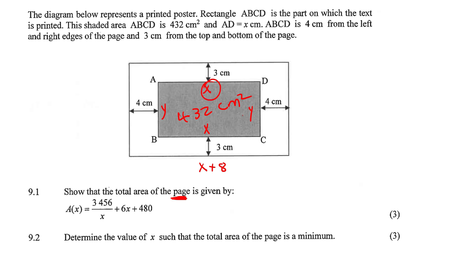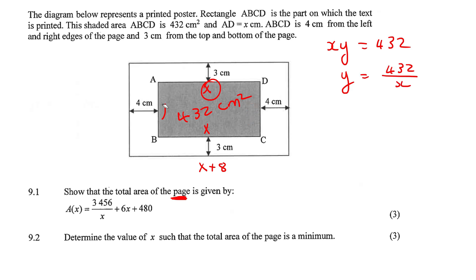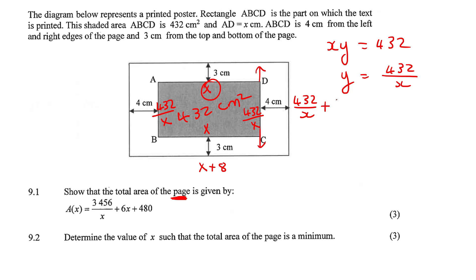So we know that X multiplied by Y is 432, because that is what area is. So we can then say that Y is 432 over X. We can put this length then as 432 over X plus 3 plus 3, so that's plus 6.